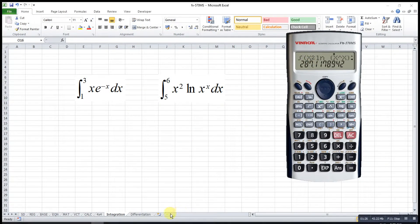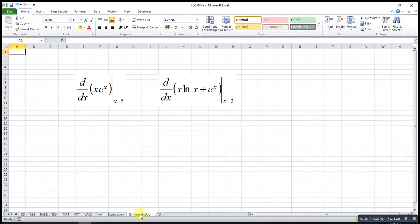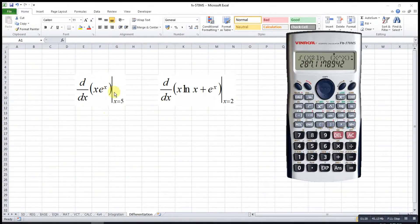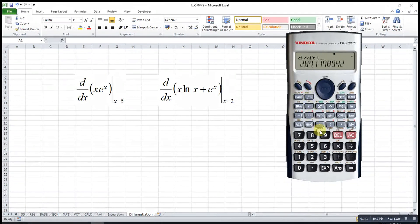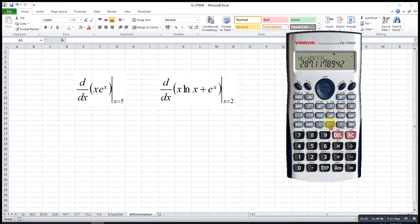Now let's try for differentiation. For differentiation, differentiate this function at x equal to 5. So it will be shift integration to obtain the differentiation. It will be alphabet x times shift exponent, alphabet x, comma 5. So this will be the answer.